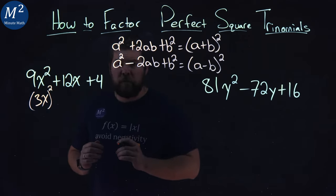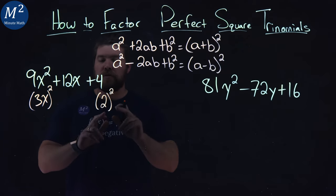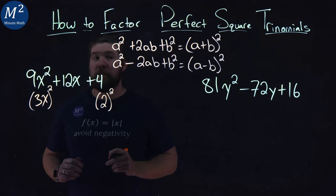What about the 4? The 4 can be written as 2 squared. 2 times 2 gives us 4.